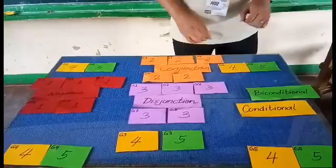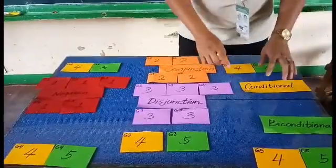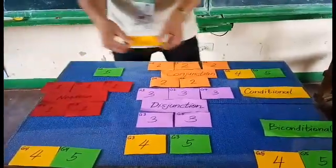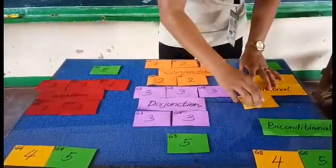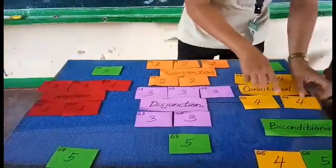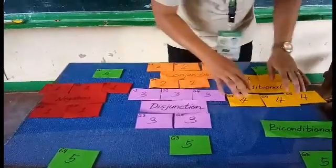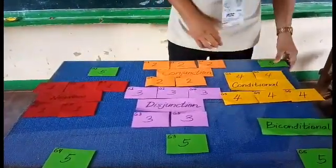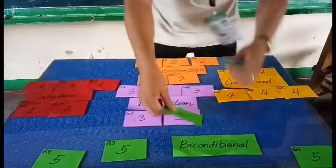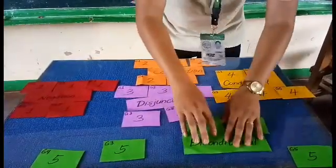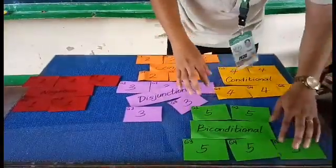For conditional, the yellow color students — student number four from each group — proceed to the conditional expert group, covering groups one through five. For biconditional, the green color students — student number five from each group — proceed to the biconditional expert group, covering groups one through five.